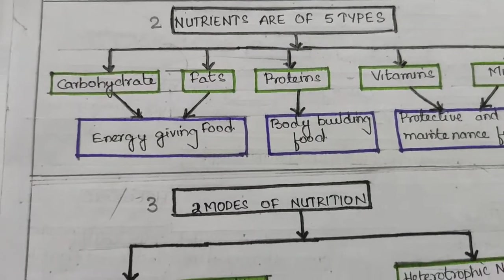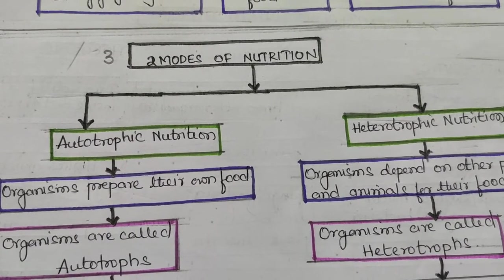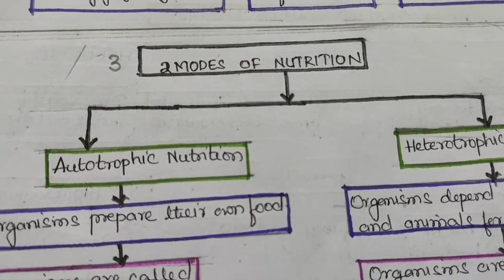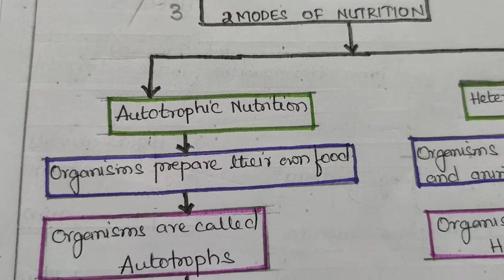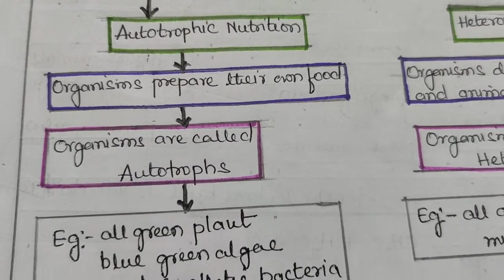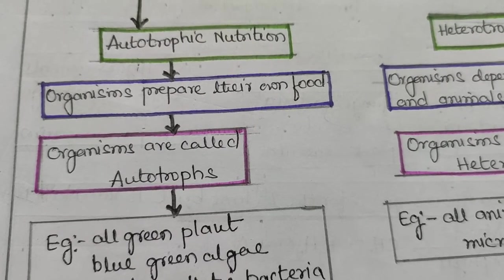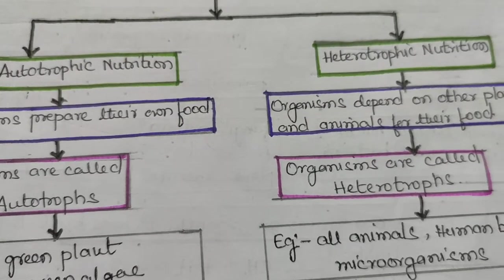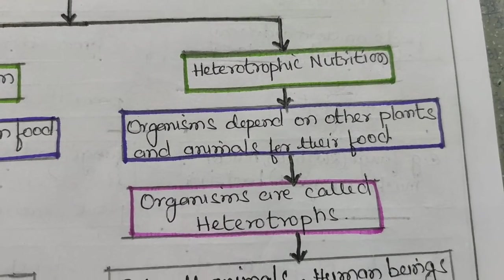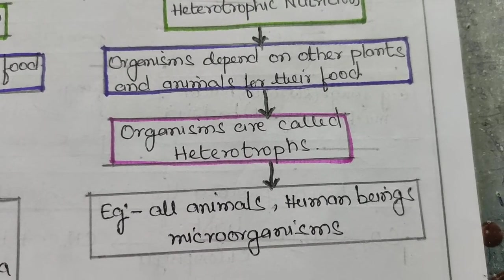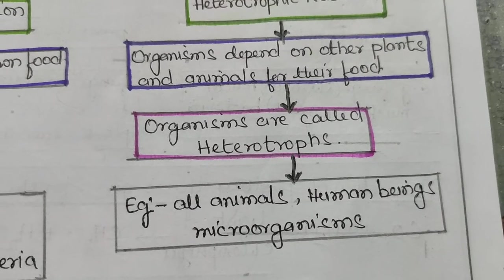Different organisms acquire food in different ways. Some can prepare their own food; some cannot. Based on this, two modes of nutrition exist: autotrophic nutrition and heterotrophic nutrition. In autotrophic nutrition, organisms prepare their own food from inorganic components — examples include all green plants, blue-green algae, and photosynthetic bacteria. In heterotrophic nutrition, organisms depend on other plants and animals — examples include all animals, human beings, and microorganisms.